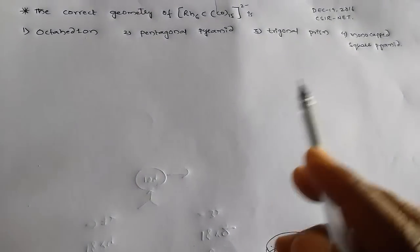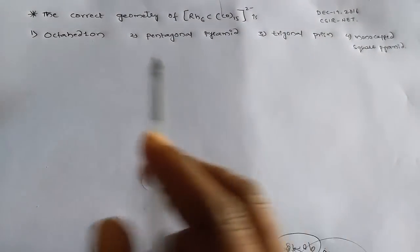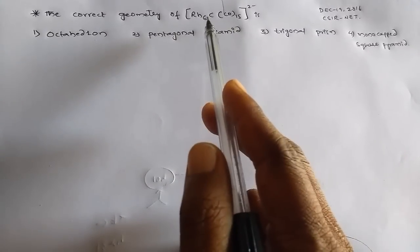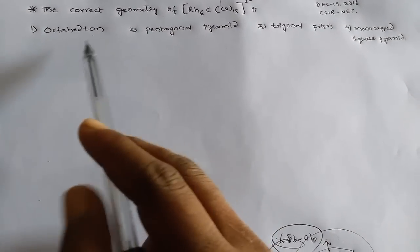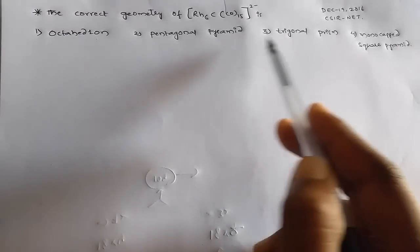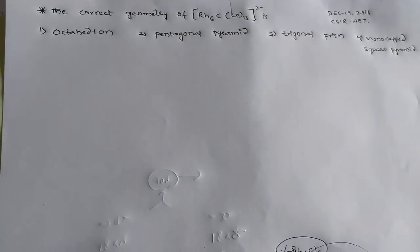Hi, this is Ranjini. This question appeared in December 19, 2016 CSIR NET. The question is: the correct geometry of this rhodium complex. We have four options: first one is octahedron, second one is pentagonal pyramidal, third one is trigonal prism, and fourth one is monocapped square prism.